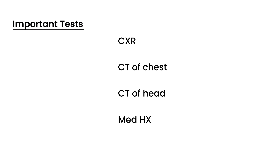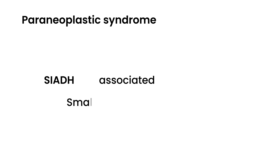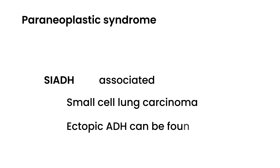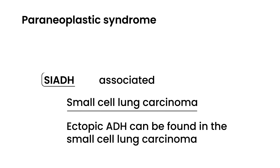I want to touch on something tested a lot on licensing exams: paraneoplastic syndrome. SIADH is a paraneoplastic syndrome — something associated with a tumor. SIADH is a very commonly tested paraneoplastic syndrome associated with small cell lung cancer. Ectopic ADH can be found in small cell lung carcinoma, and as a result, someone with this cancer can develop SIADH. SIADH can also occur with pulmonary conditions such as pneumonia, abscess, and tuberculosis.